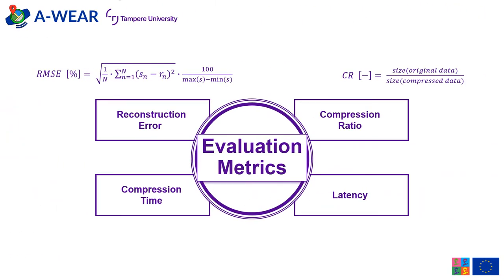The previously mentioned methods were compared using several evaluation metrics. For the error of reconstruction, we used root mean square error between the original data and its reconstruction, recalculated into percentage as shown in the equation. Compression ratio describes the ratio of sizes of original data to compressed data. Compression time evaluates how fast the compression of data is. And finally, latency corresponds to the ability of the system to promptly transmit data after receiving it.